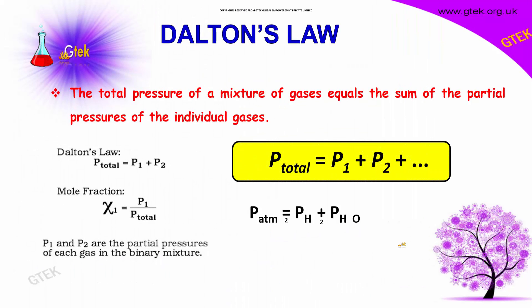So as I told, Dalton's law is nothing but the total pressure of a mixture of gases equals the sum of the partial pressures of individual gases. So P1, P2, and so on. That's how it was Dalton's law.